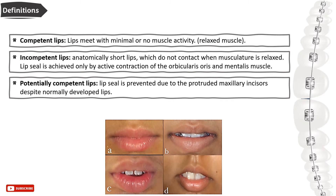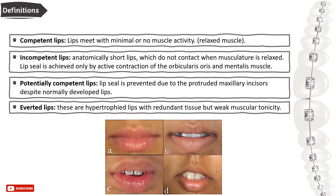With incompetent lips, the lip seal is achieved only by active contraction of the orbicularis oris and mentalis muscles. Potentially competent lips are those where lip seal is prevented due to the protrusion of maxillary incisors, despite normally developed lips. Everted lips are hypertrophied lips with redundant tissue but weak muscular tenacity.